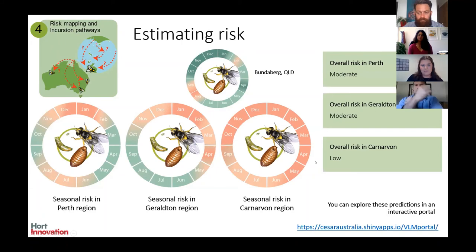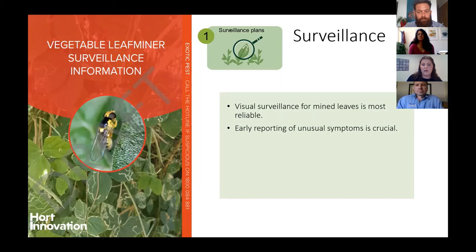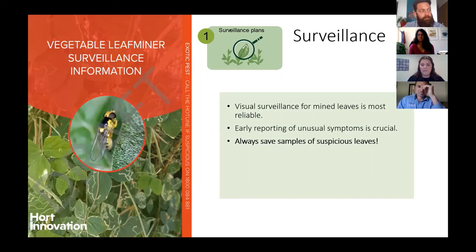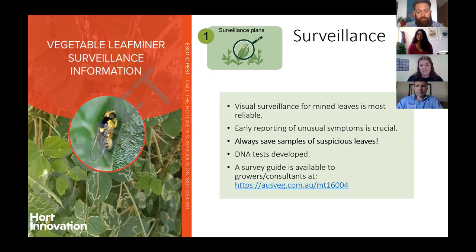The project has also developed surveillance guidelines for vegetable leaf miner. Visual surveillance is less difficult by detecting from mined leaves rather than trying to detect the pest itself, given how small it is. Early reporting of unusual symptoms is critical — look for leaf mines, take a sample, place it in a bag in the fridge and call the exotic plant pest hotline. DNA tests have also been developed that detect DNA left over in an empty leaf mine, allowing identification without needing to find the pests themselves. A surveillance guide is available from the AusVeg website.